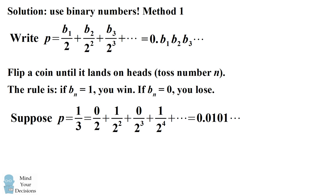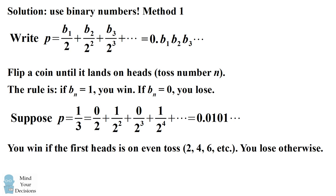For example, let's say the probability is 1 third. This will be 0, 1, 0, 1 and so on. You win if the first time the coin shows heads is on an even number toss — 2, 4, 6, etc. — and you lose the game otherwise.